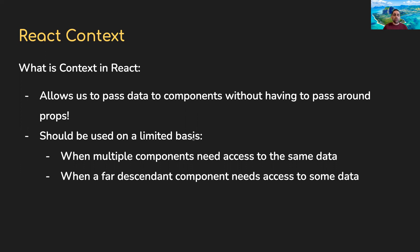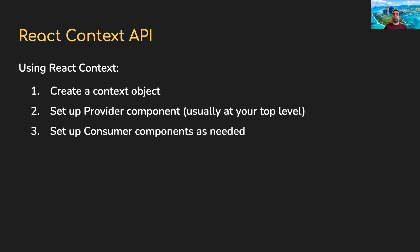Luckily, creating context is not super complicated. There are a few steps we need to follow. Let's look at the three steps to create a React context. You can create multiple contexts — you don't need just one. The three steps are: step one, create a context object; step two, set up a provider; and step three, set up consumer components.